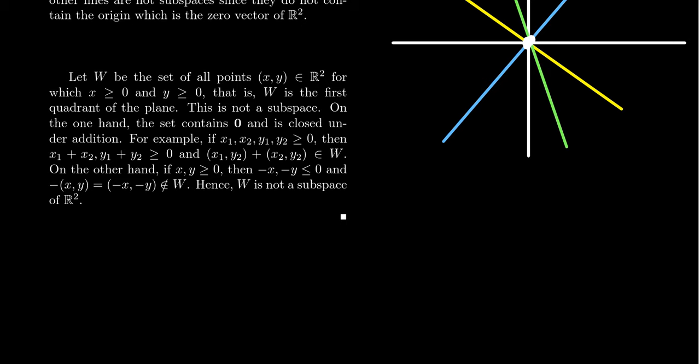If your affine set doesn't pass through the origin, then automatically it's ruled out. So when it comes to subspaces versus affine sets, a flat is a subspace if and only if it contains the zero vector. We'll talk some more about that maybe a little bit later. But what about some other type of set? So take, for example, the set W.